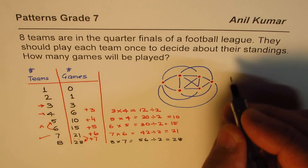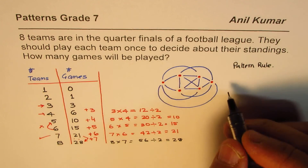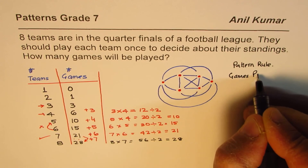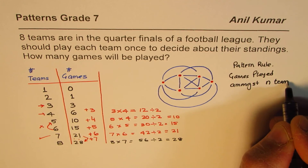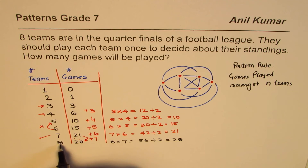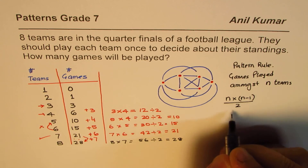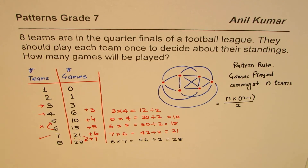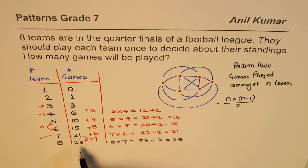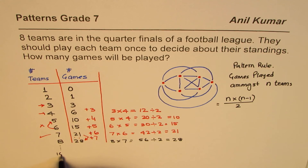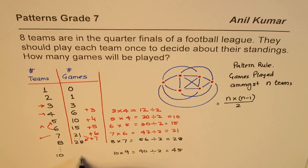So we have a formula: games played amongst N teams equals N times (N minus one), divided by two. For eight teams it was eight times seven divided by two, which is twenty-eight. If there are ten teams, then the number of games is ten times nine, which is ninety, divided by two, which is forty-five.